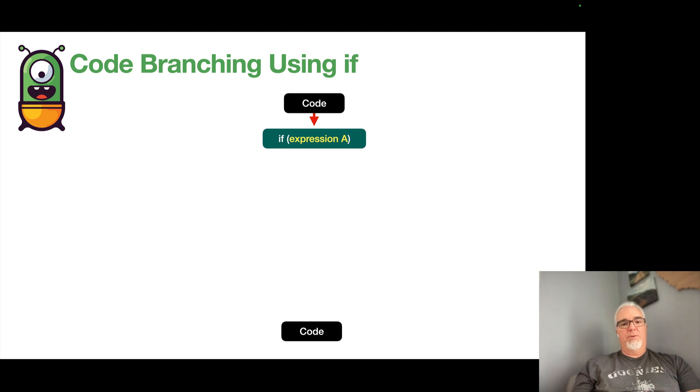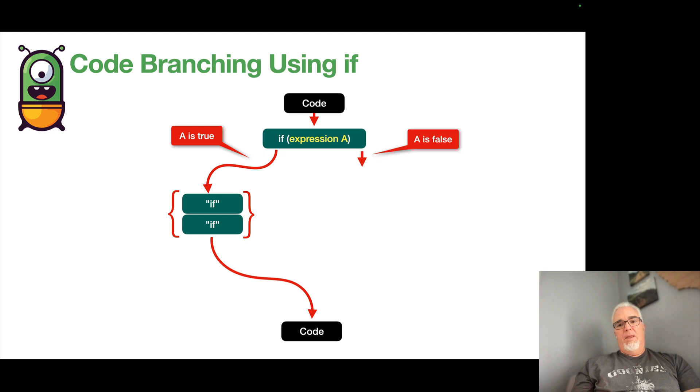if expression A is true, then we do the if code and then we branch back. If it's false, of course, then we now have another expression that says, well, A wasn't true, but what about B? Is B true?